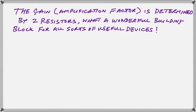Now, as you can clearly see, the gain, the amplification factor, the multiplier, remember beta in transistors, the gain for this circuit is determined simply by the two resistor values. So we can take an op-amp and change its gain simply by changing those resistors. And that's a wonderful thing, because this op-amp becomes a building block for all sorts of useful devices.